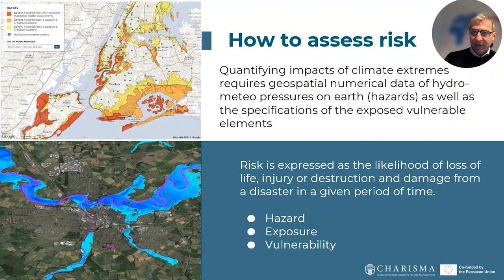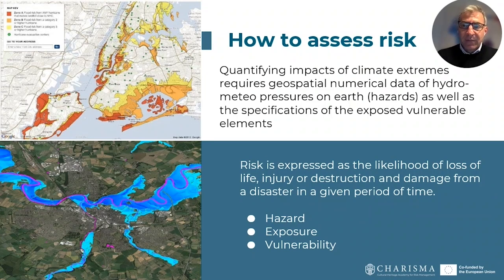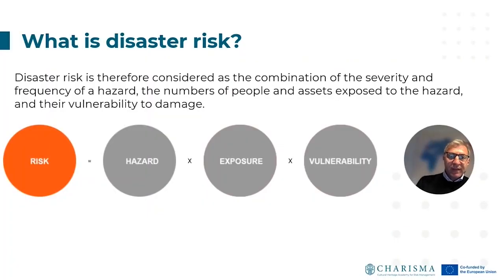There is a frequency of occurrence for disasters. If you consider a very large time range, like 500 years, you have a higher likelihood that a major disaster may occur. If you consider a smaller range, like 10 years, the probability of a big disaster occurring is lower. Disaster risk is therefore considered as the combination of the severity and frequency of a hazard, the number of people and assets exposed, and the vulnerability of those assets. These three terms — hazard, exposure, and vulnerability — must be identified and quantified.